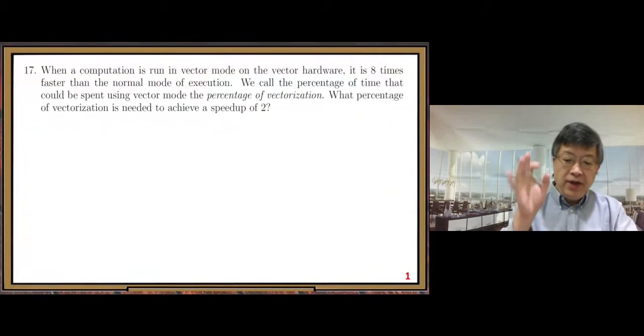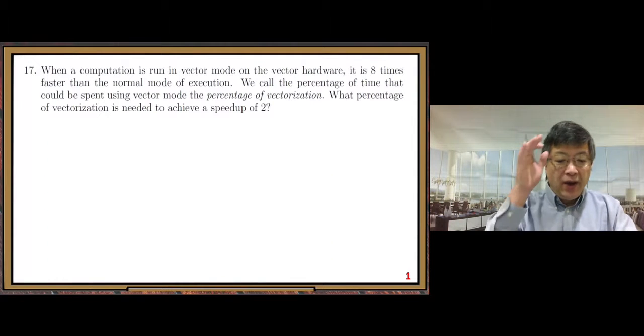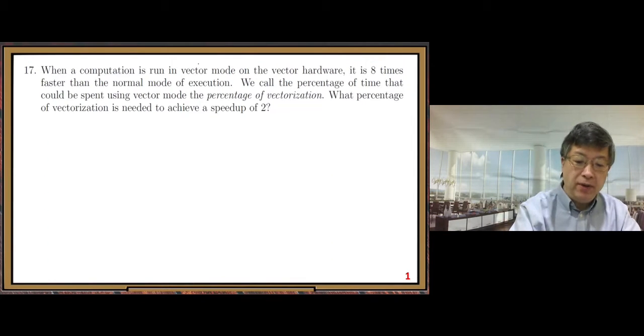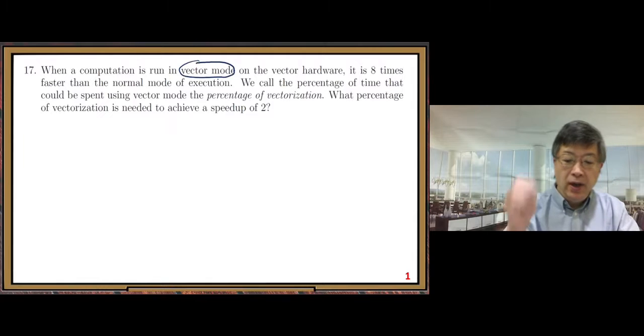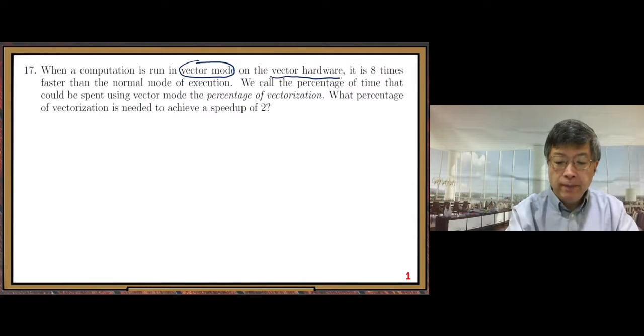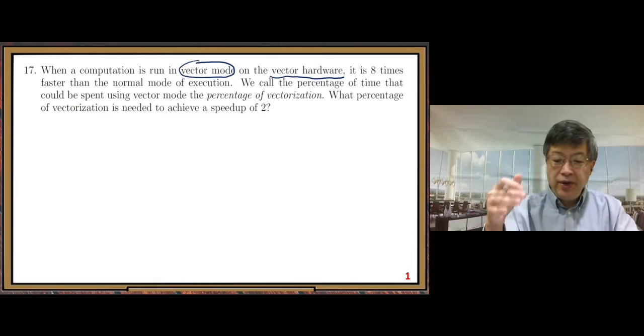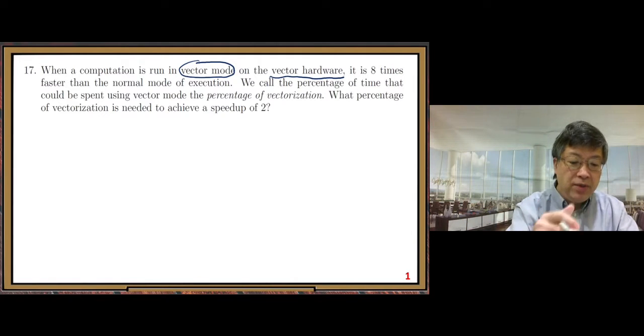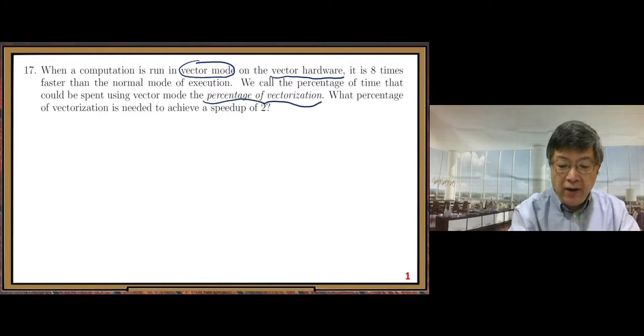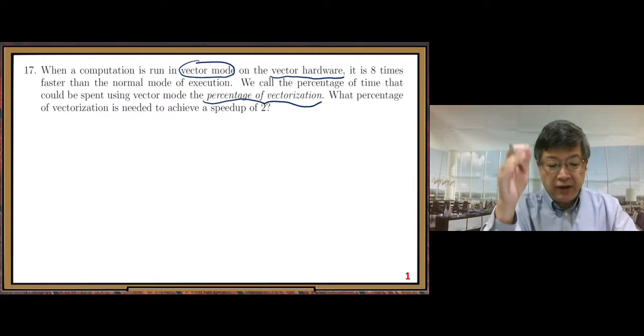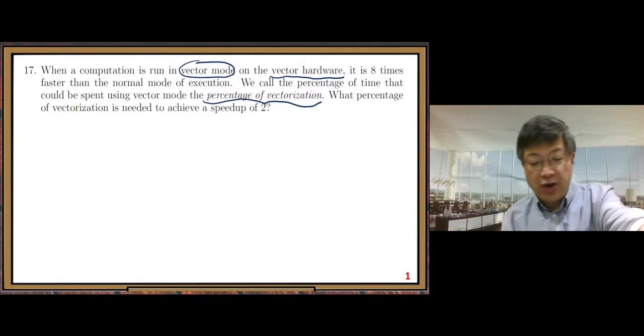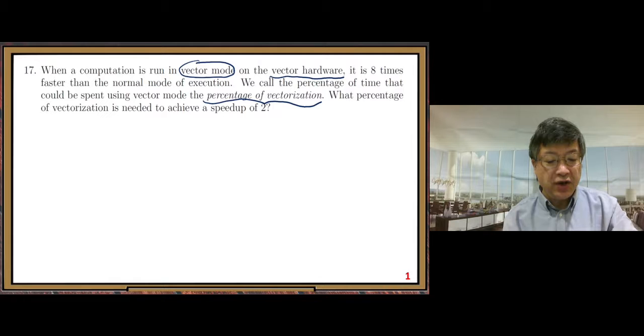Number 17, this question. When a computation is run in vector mode on the vector hardware, it is eight times faster than the normal mode of execution. We call the percentage of time that could be spent using vector mode the percentage of vectorization. The question: What percentage of vectorization is needed to achieve a speed-up of two?